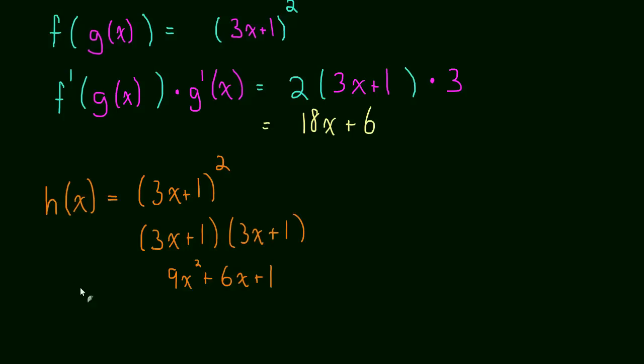And then if we take the derivative, so h prime of x, we just do the power rule. We get 18x plus 6. So, we got the same answer, which is what we expected because we took the derivative of the same exact function, 3x plus 1 all squared. So, if we could do this, why do we need this fancy chain rule up here? And I'll show you why.